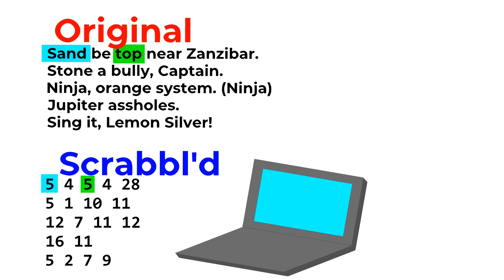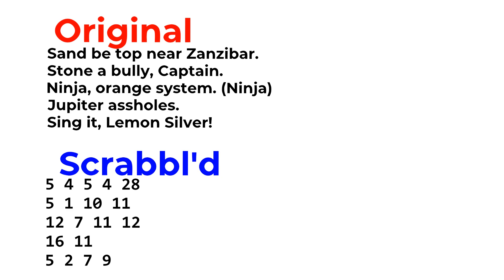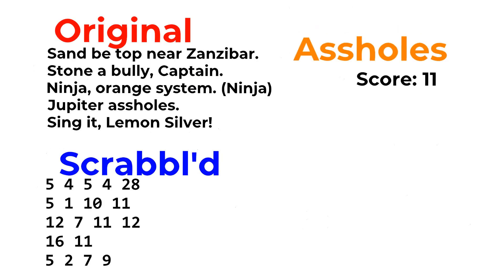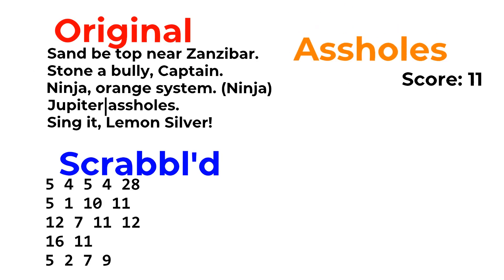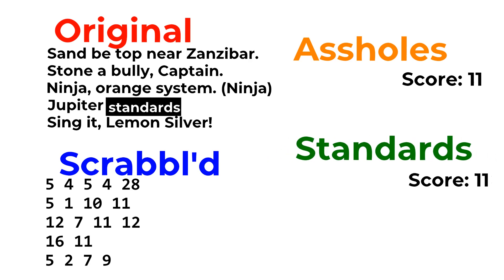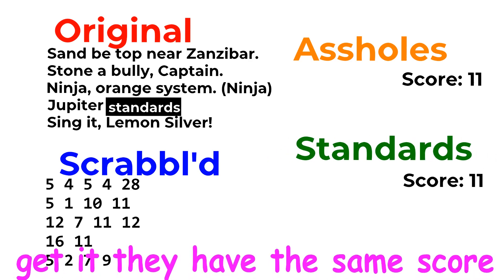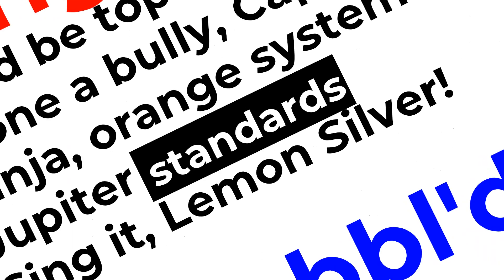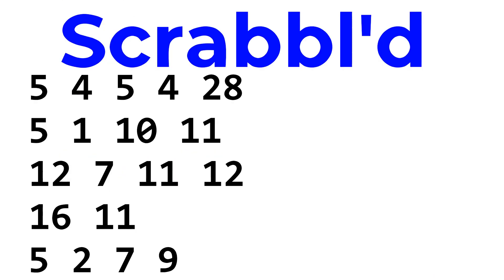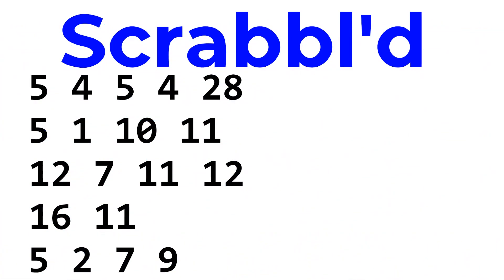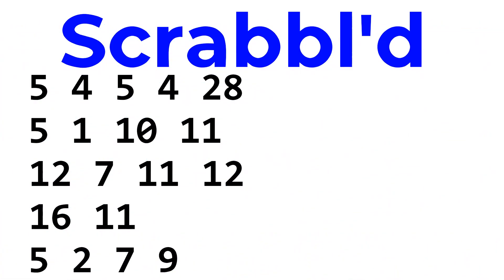Sand and top are interchangeable, since they both have the same Scrabble score. Also, your program can contain the word assholes, but in this video I'd rather have standards. But these numbers still don't tell you very much about what this does, so I guess we'll just run through it.